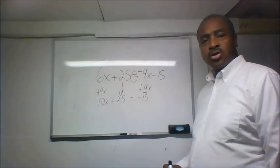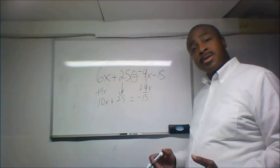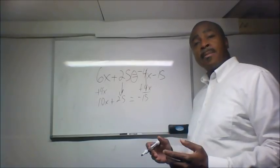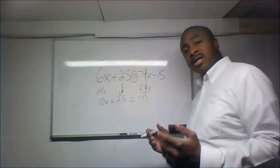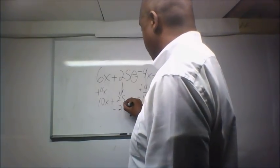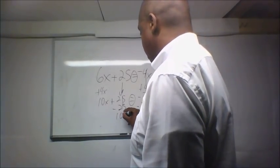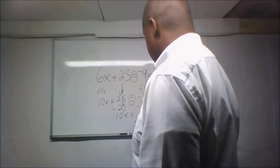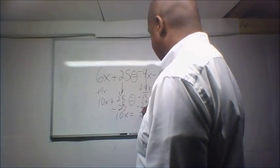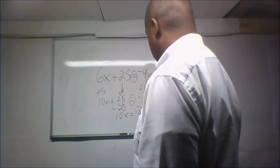This is plus 25. So again, this is all about doing the opposite. So if it's plus 25, the opposite of plus 25 is minus 25. Remember, this is an equation. So if I do it over here, I have to do it over here. That cancels out, leaving me with 10x equals negative 40.